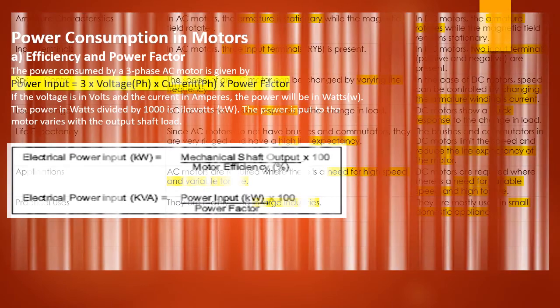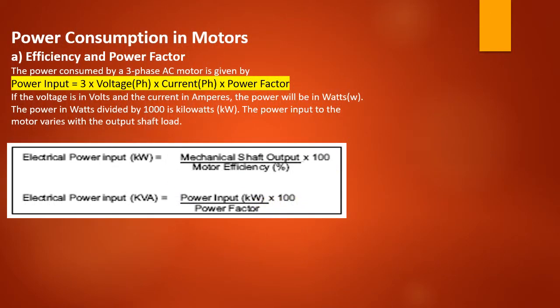An important formula for power conversion in motors: power input = √3 × V × I × cos φ (voltage × current × power factor). This is very important to calculate power input. They may give you the mechanical shaft output and motor efficiency and ask you to calculate power input in kilowatts, or they may give you power input and power factor and ask you to calculate electrical power input. You must learn this formula by heart as numericals based on it can appear in objective or short-answer type questions.